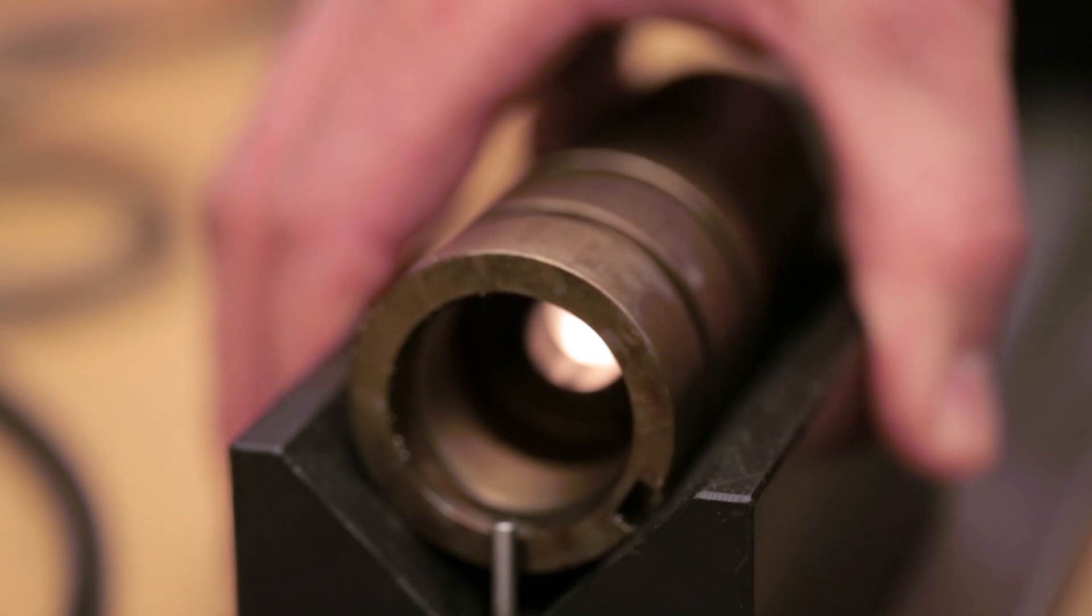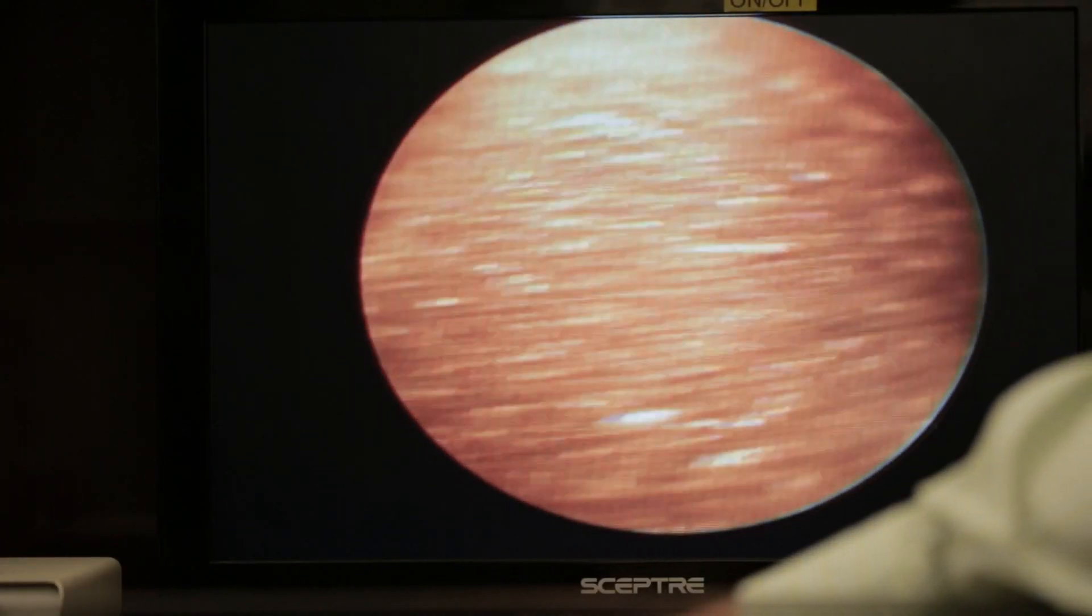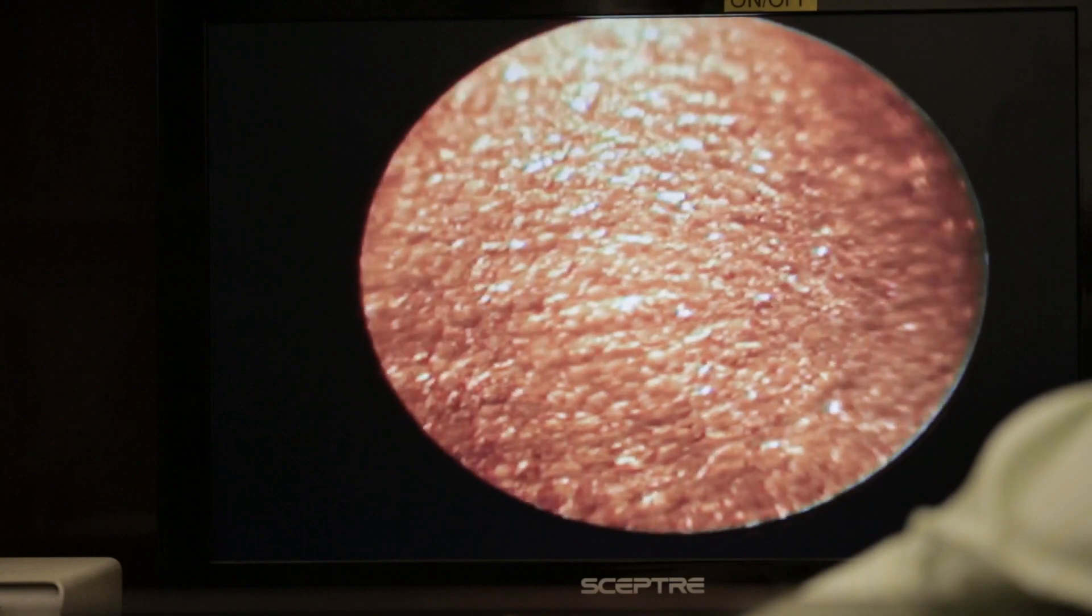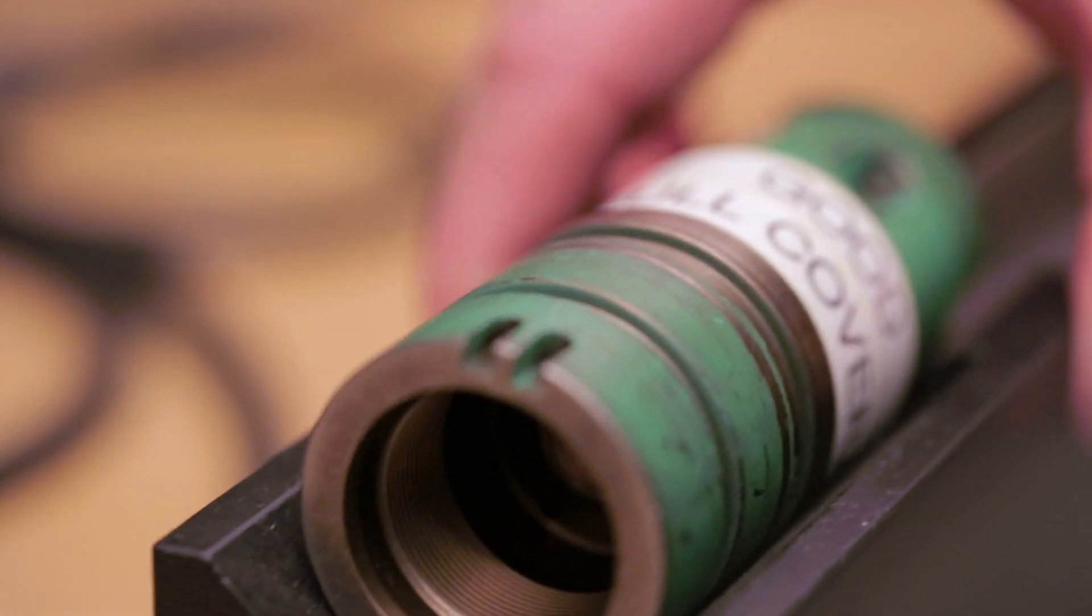Where we have found a great application for shot peening is in the fuel injector market. Without shot peening, these fuel injectors will fail at maybe 10,000 or 50,000 cycles, and after shot peening, we've been able to get up over a million cycles without failure.